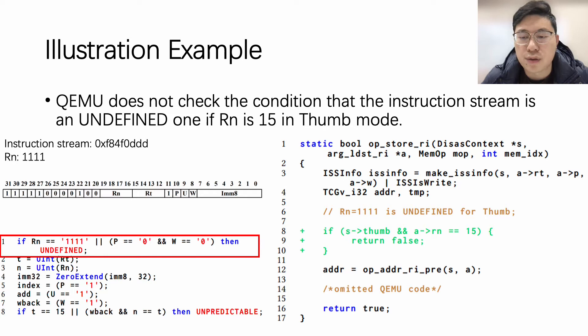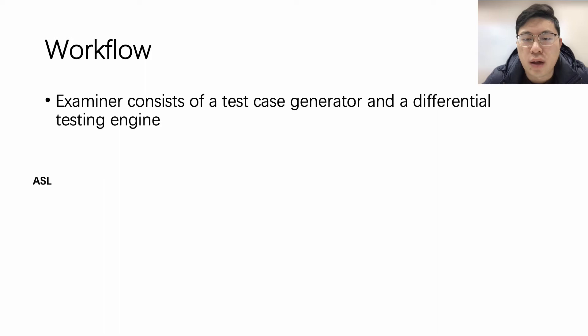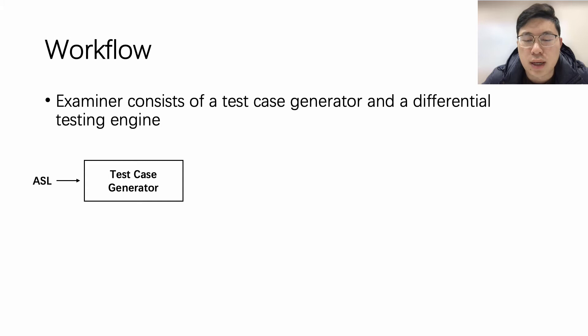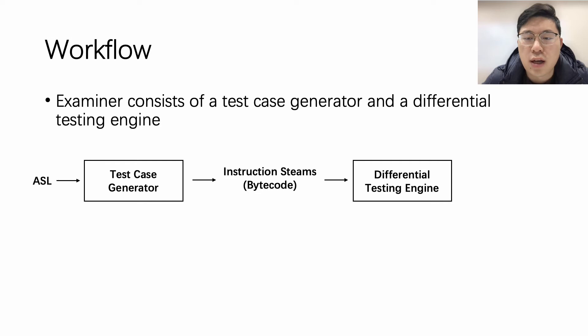Now let me introduce the workflow of Examiner, which consists of a test case generator and a differential testing engine. The test case generator receives the ASL of decoding and execution to generate instruction streams, which are the bytecode of instructions. After that, we feed the instruction streams to the differential testing engine. After comparing the execution results between real devices and CPU emulators, we locate the inconsistent instructions.